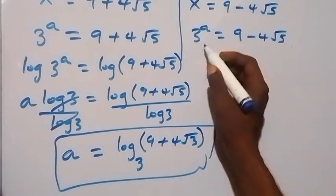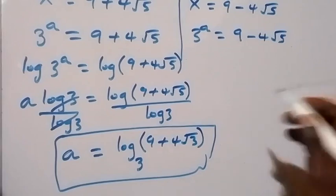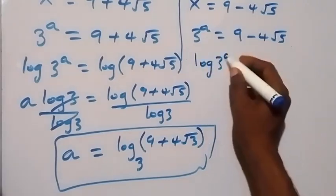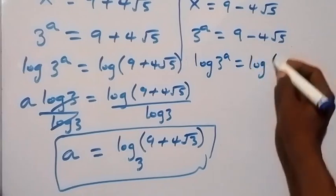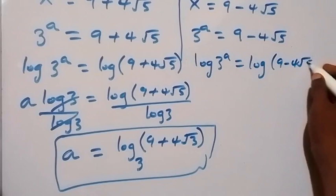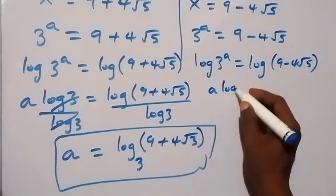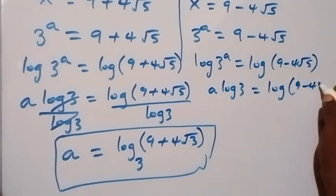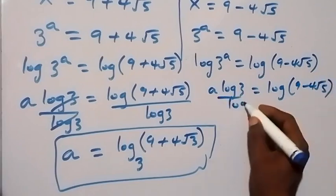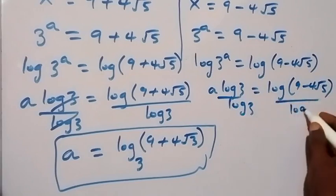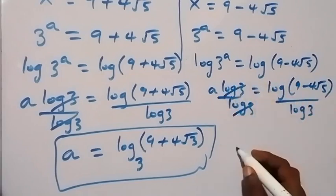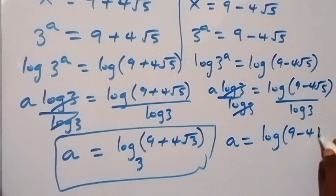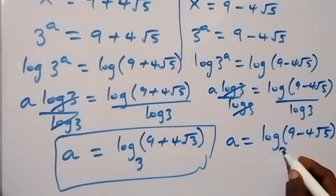Similarly, for the second case, taking the log on both sides: log of 3 raised to power a equals log of (9 minus 4 root 5), which gives a times log 3 equals log of (9 minus 4 root 5). Dividing both sides by log 3, the log 3 cancels, and we get a equals log of (9 minus 4 root 5) over log 3, which is log base 3 of (9 minus 4 root 5).